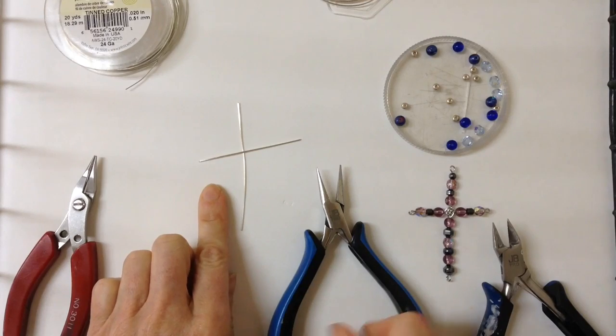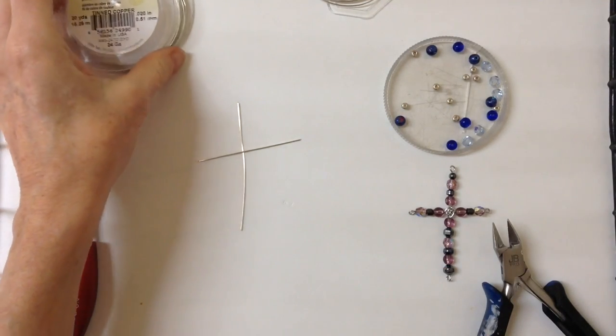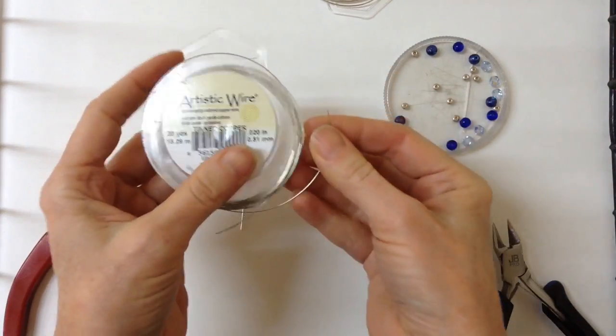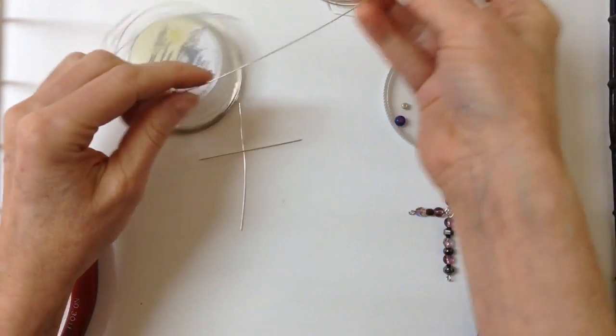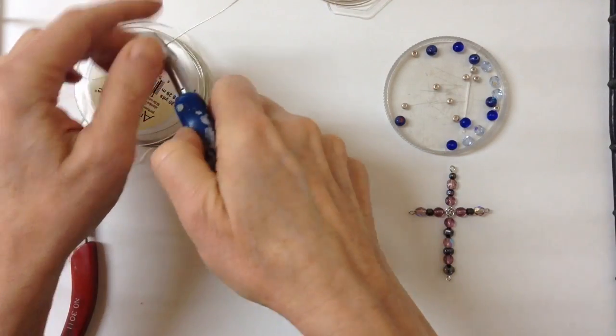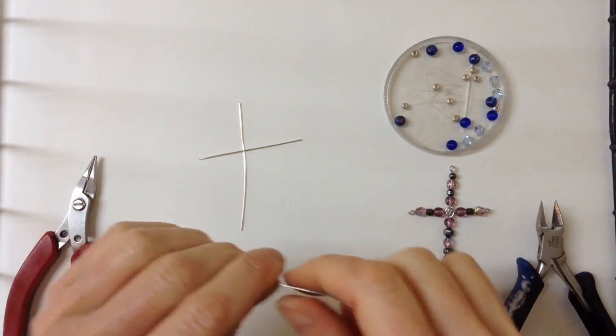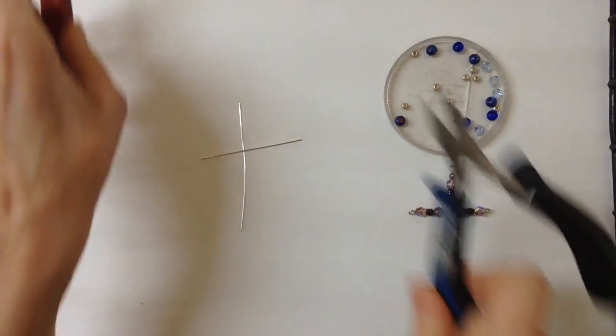That'll be your basic shape. Then from there we'll get our 24 gauge wire and cut a bigger piece, about 8 inches or so. Now the tricky part, a little bit tricky.